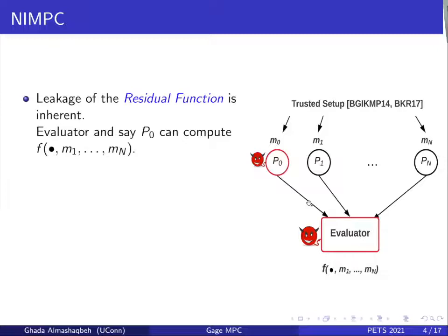In the NIMPC setting, the leakage of the residual function is inherent, meaning that if the evaluator colludes with any of the parties — say party zero — the evaluator can recompute the function over arbitrary values of that colluding party's input while fixing the inputs of the rest. Translating that to our example, the last party in the computation, PN, can wait until it sees all messages from the rest of the parties and then, by recomputing the leakage function, figure out the highest previous bid and act accordingly.